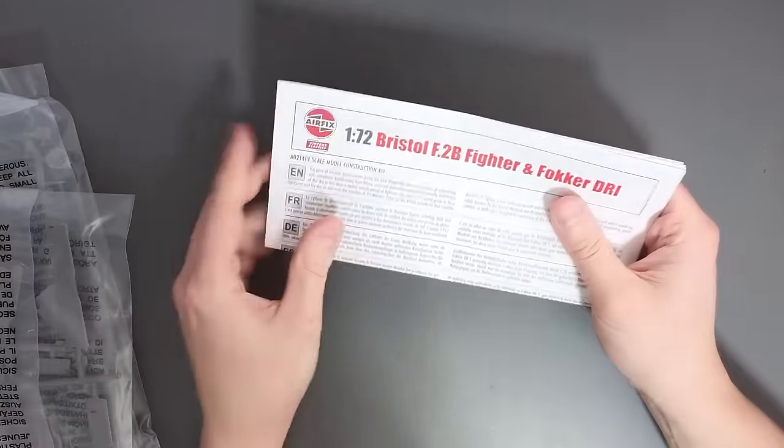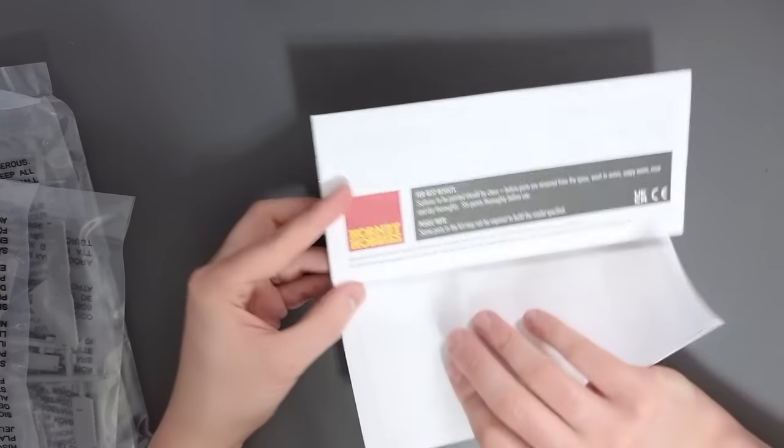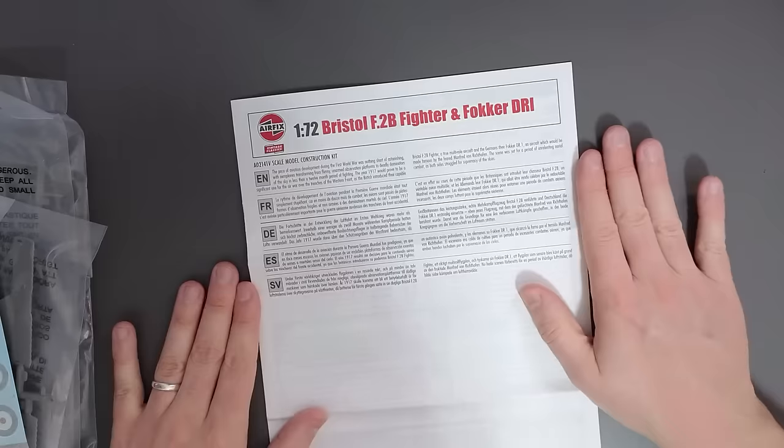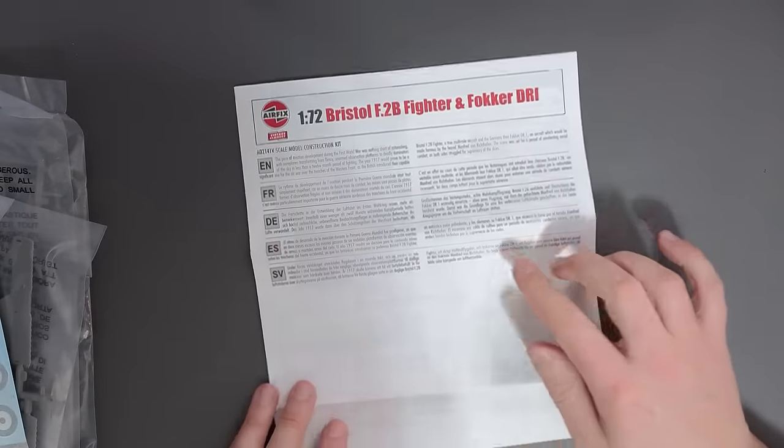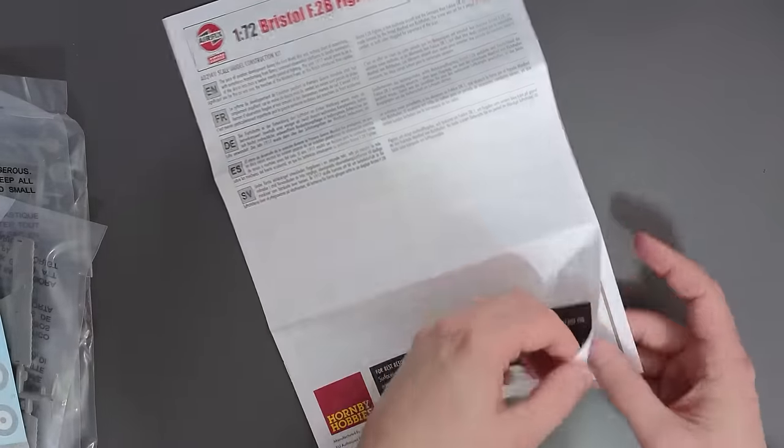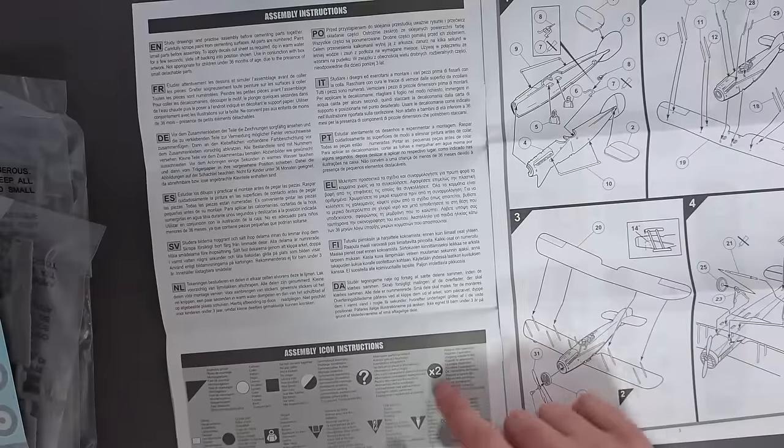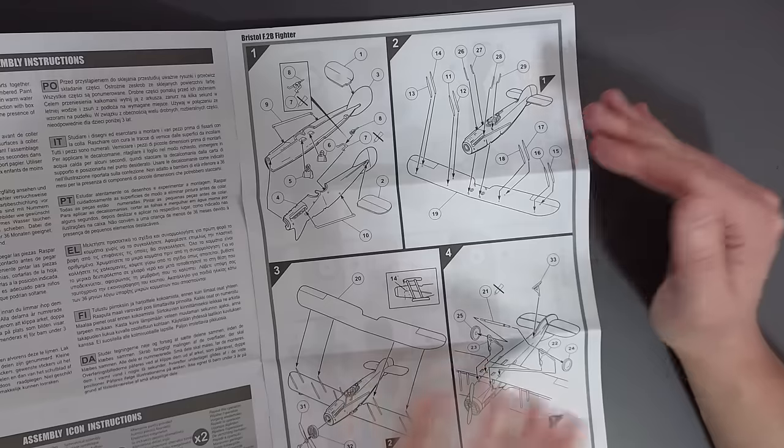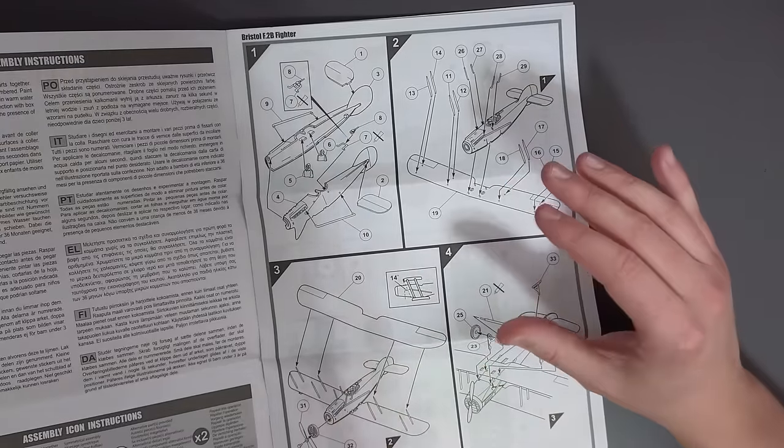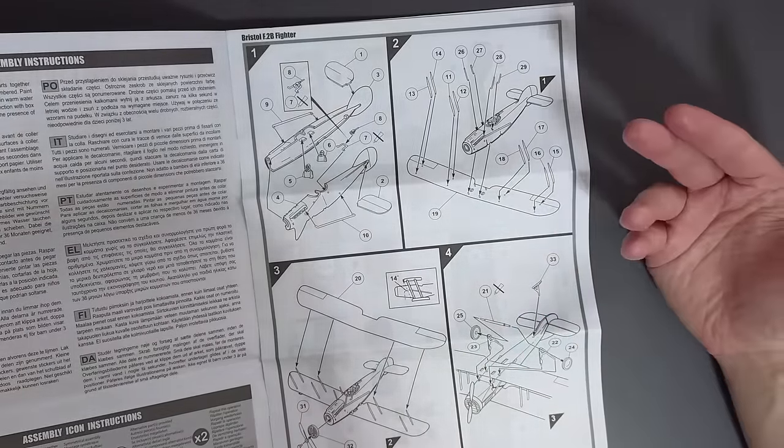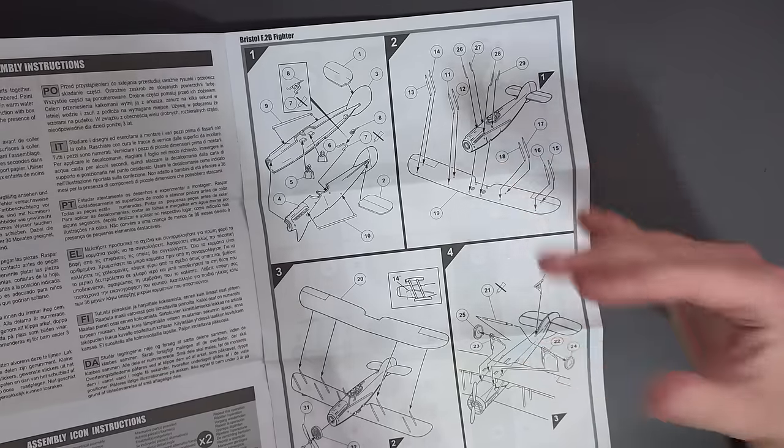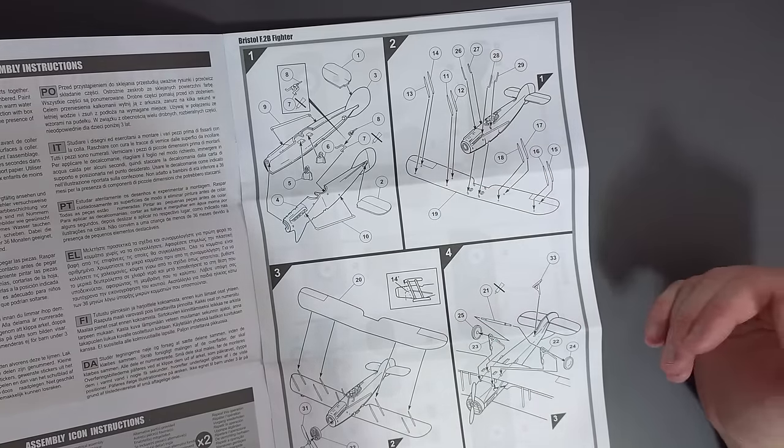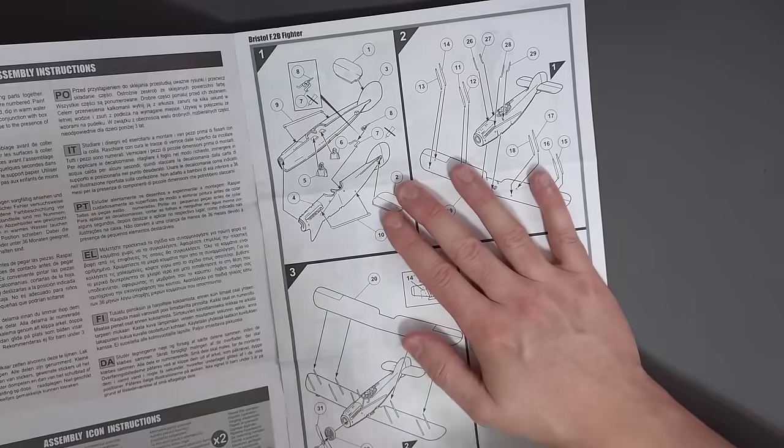We'll have a look at the plastic parts in a minute. We have our instructions, and there should be some transfers in here somewhere. There they are. So, normal format from Airfix. Information about the actual aircraft on the front. Hints and tips about washing your parts down the bottom there. Flipping over, some more safety instructions, and a key to the icons we will encounter. So first up is the Bristol F2B Fighter. And the instructions are based on older instructions, which came with the sets some time ago, but they've just been updated slightly to make them a bit more modern. However, as you can see, they are a little cluttered. There is a lot going on in each step.